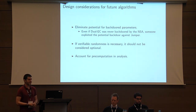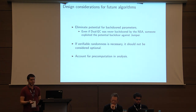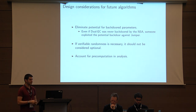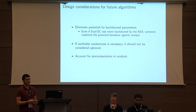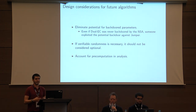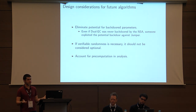Considerations for the future: it's always good when designing crypto algorithms and protocols to try to eliminate the potential for backdoored parameters. We saw with Dual EC that even if it was never actually backdoored by whoever standardized it, it has been weaponized and exploited in the real world. If you need verifiable randomness in your parameters, really stress that and don't allow it to end up marked as optional even if something doesn't seem immediately feasible. And account for pre-computation in your analysis: if everyone uses the same set of primes, the cost of running the number field sieve on one of those primes is amortized across breaking many instances.